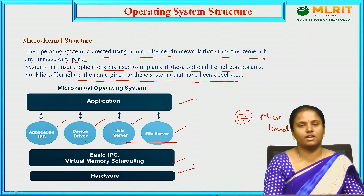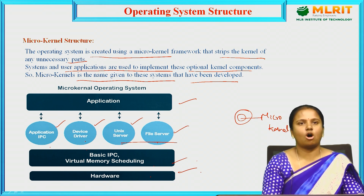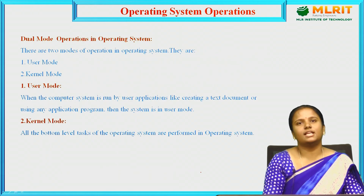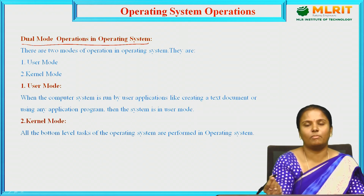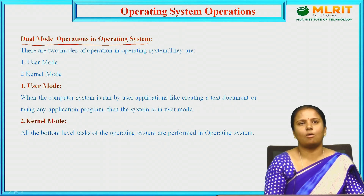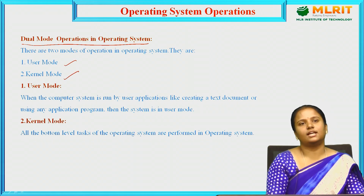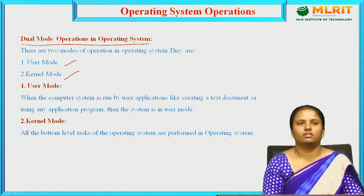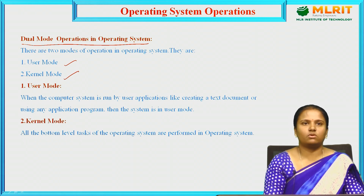So those are the four OS structure types we have discussed: simple structure, monolithic structure, micro kernel structure, and layered structure. Next, we will see the modes of operating system operations. Operating system operations are of two types — this is known as dual mode operation. The operating system consists of two modes: user mode and kernel mode, similar to the privileged and unprivileged modes discussed in the monolithic diagram.